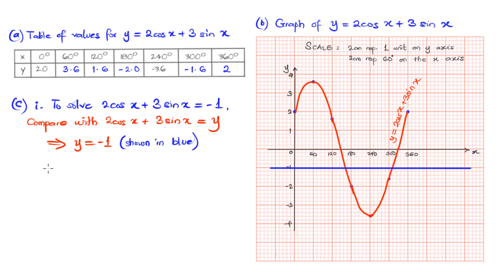Once we have that, we should label that. Like I label the red, you also label the blue, that this is y = -1. What is the solution to that? We just need to trace from the point of intersection of the sinusoidal curve and the straight line, and trace to the x-axis to find the solution for our equation.